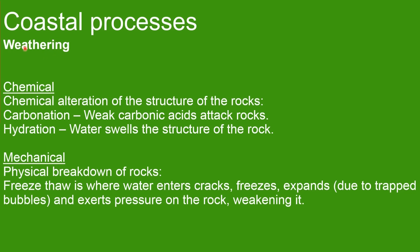The next coastal process is weathering. There are two types: chemical and mechanical. In chemical weathering there are two types — carbonation and hydration. Carbonation is where weak carbonic acids attack the rocks, and hydration is where water swells the structure of the rock. Mechanical weathering is the physical breakdown of rocks.